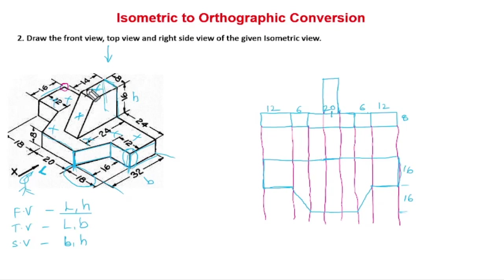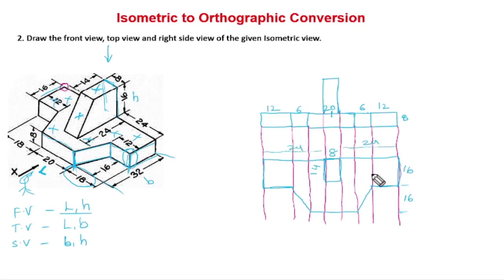So the width is 14mm and the length is 18mm. I will draw a line of length 14mm from here, then 8mm, and again 14mm. So this is 14, this is 8, and from here to here it is 24, and from here to here it is once again 24. The top view of the inclined block is now completed — this is 24, then 14, 24, and 8.